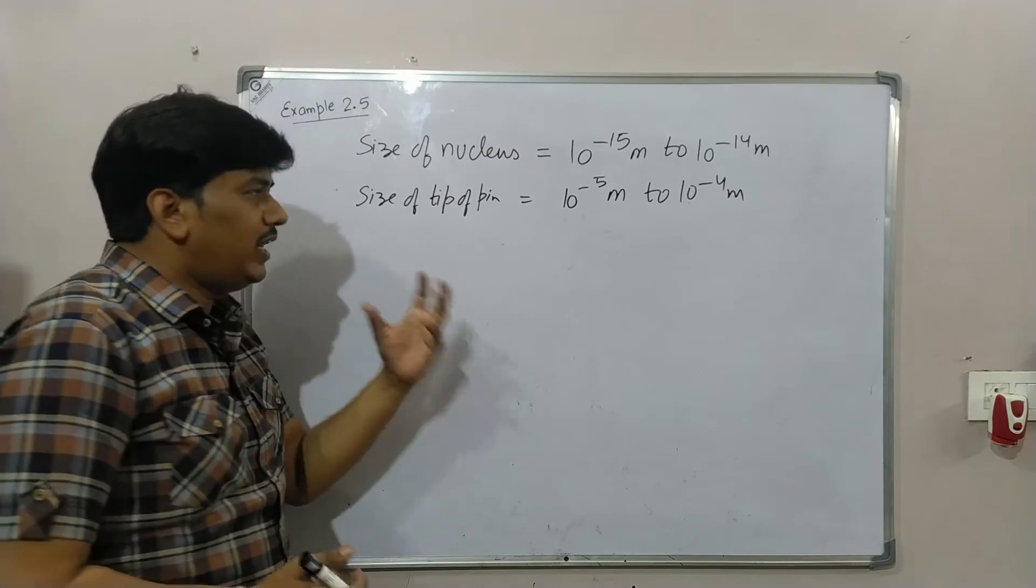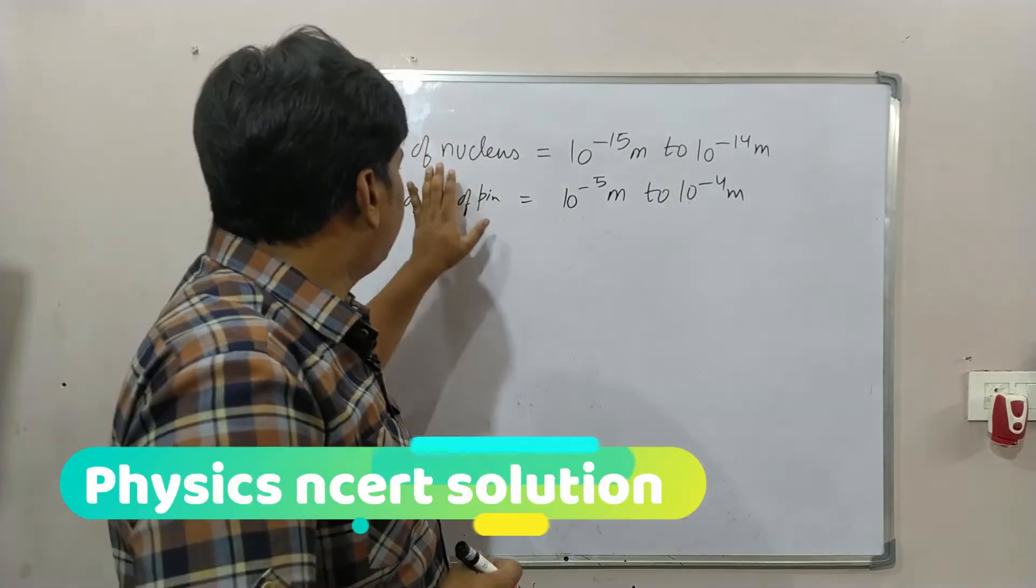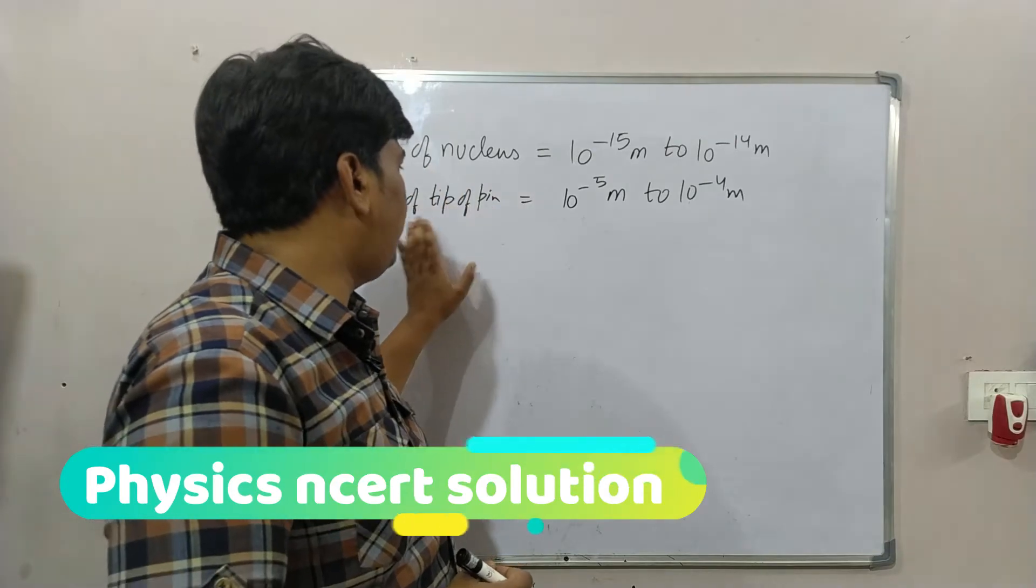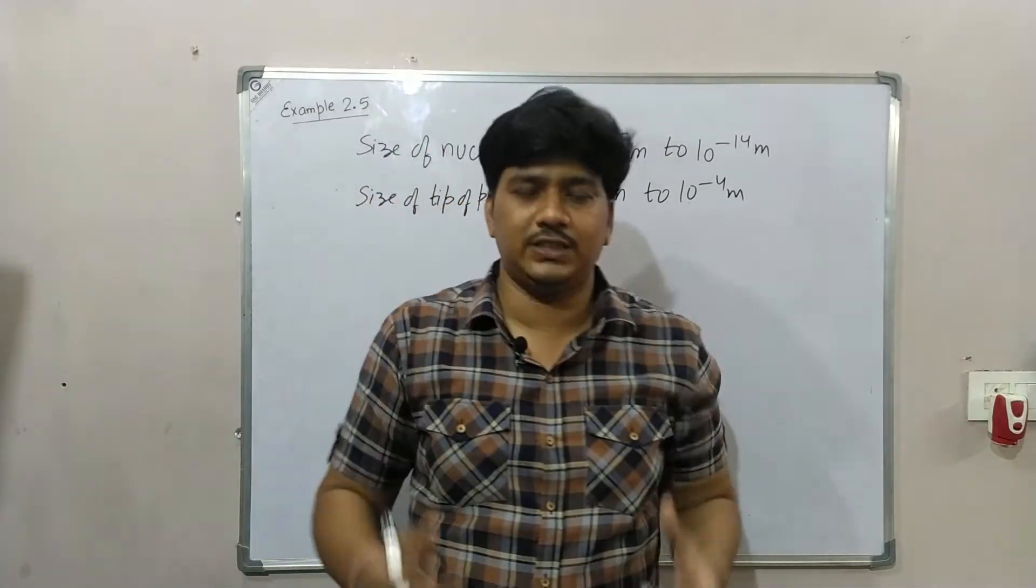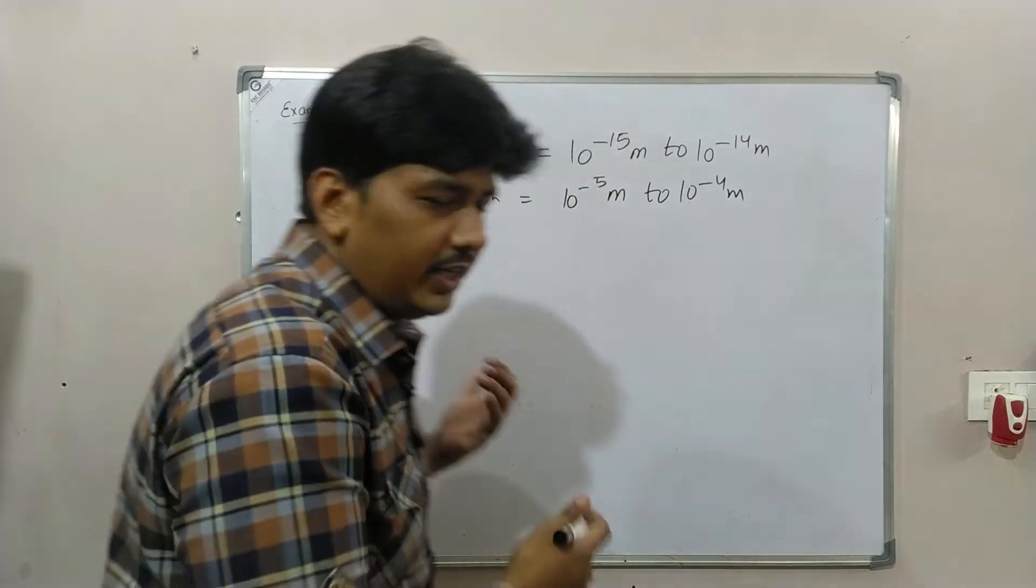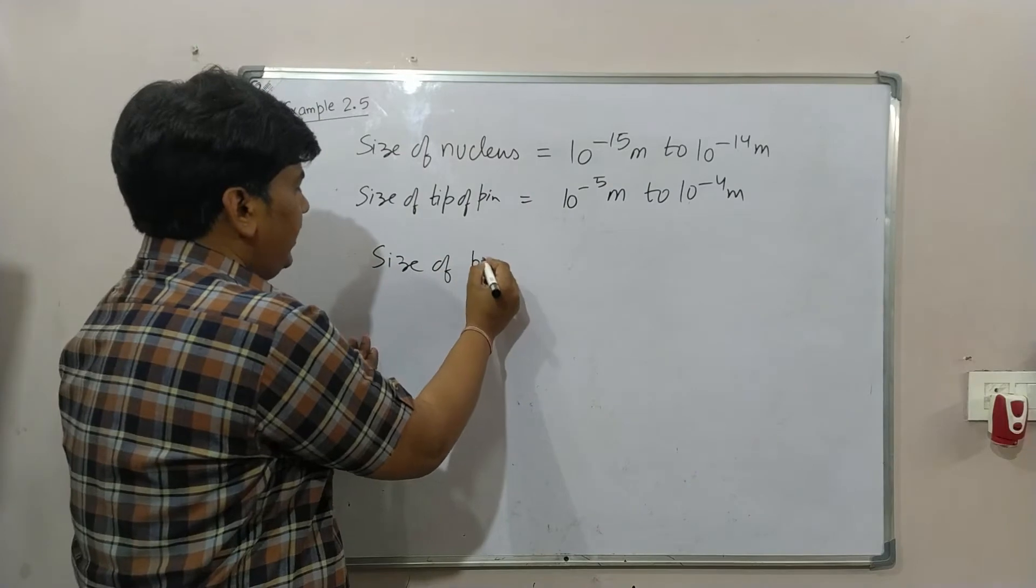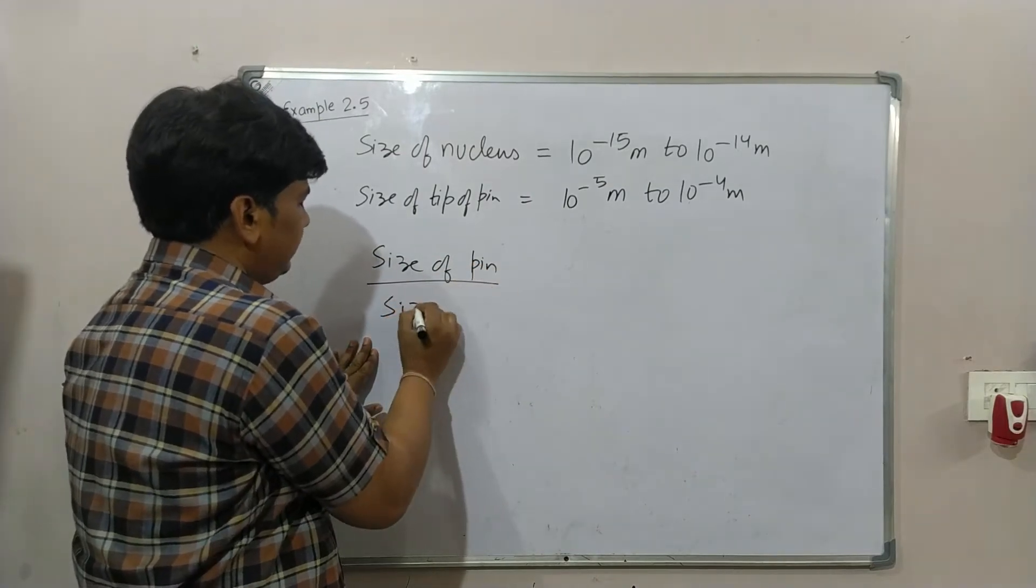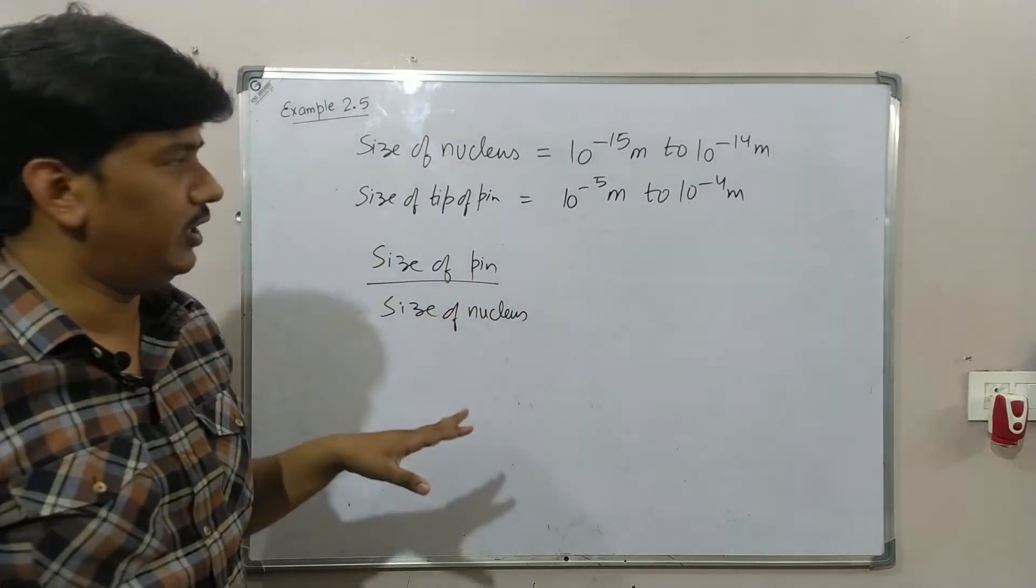Now we will first find when we scaled up the size of nucleus to the size of tip of pin, how many times did we increase it. How to find this? You will divide size of pin by size of nucleus.